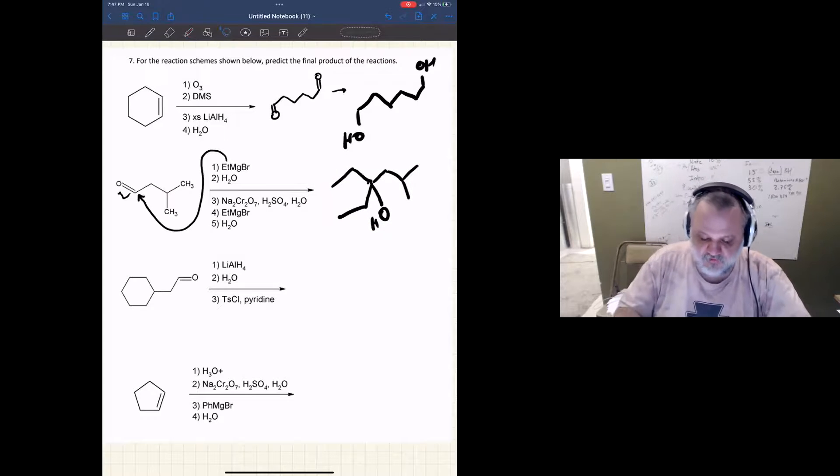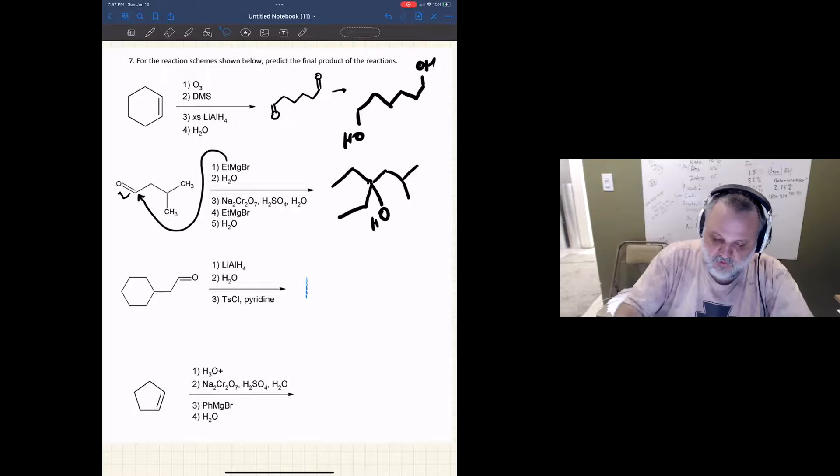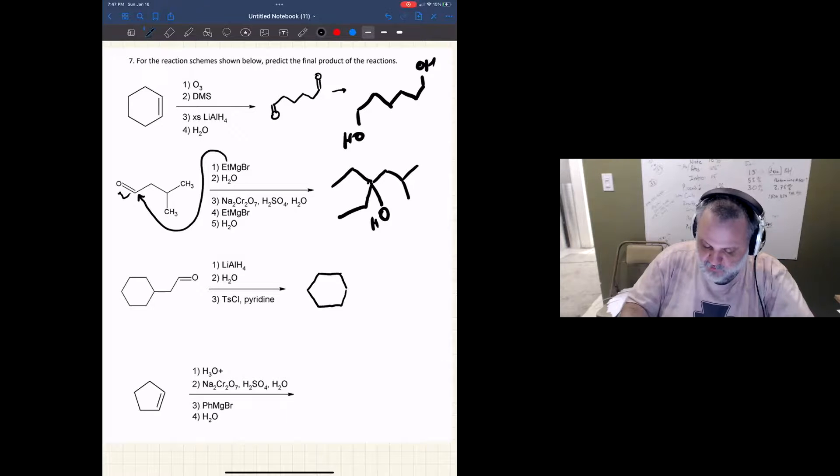Okay, what about the next one? I'm going to start off with some lithium aluminum hydride, and so that's a reducing agent. So all of this action is going to happen over there at the carbonyl group. I'm going to take this carbonyl group and reduce it to an alcohol.